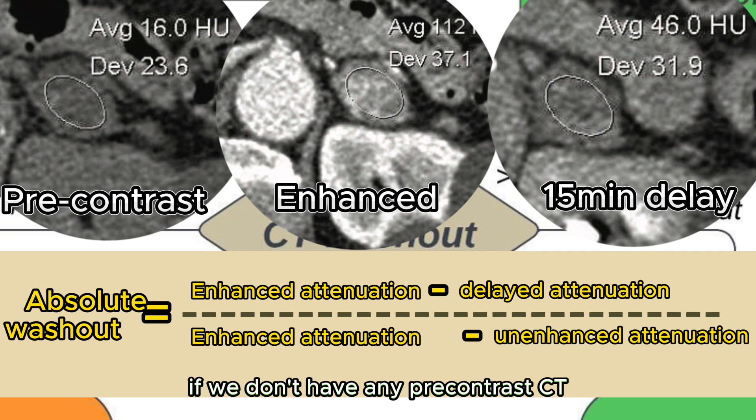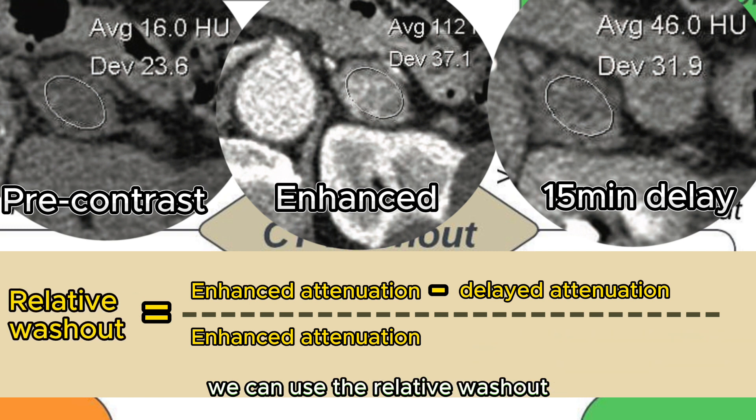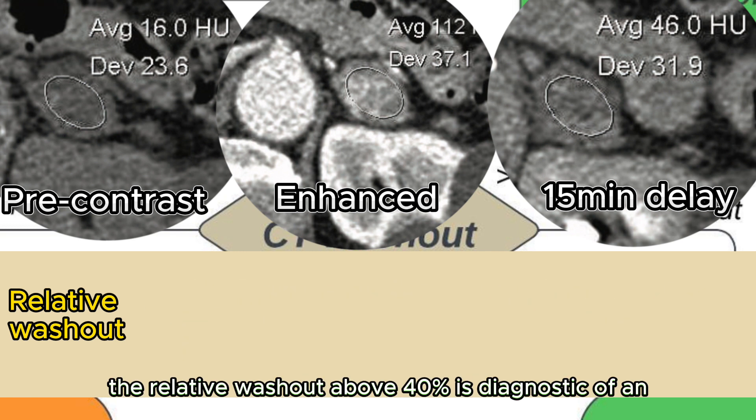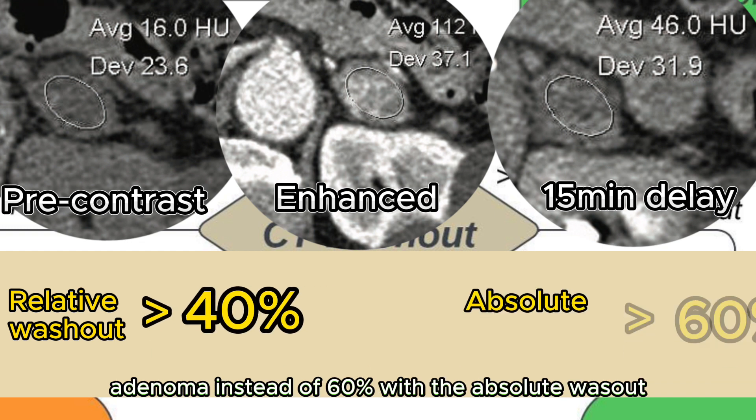If we don't have any pre-contrast CT, we can use the relative washout. And in this way, we can bypass the first step of the flowchart, as I mentioned before. And with this formula, the relative washout above 40% is diagnostic of an adenoma instead of 60% with the absolute washout.